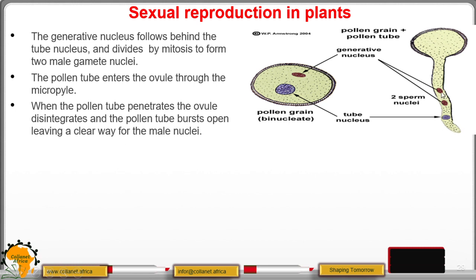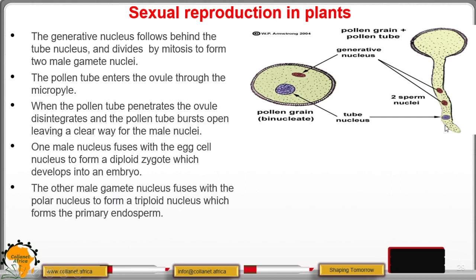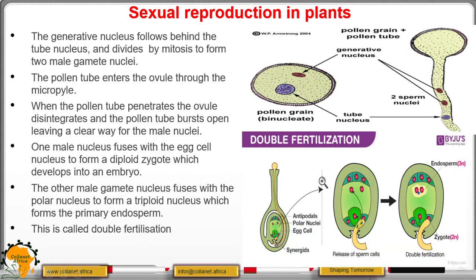One male nucleus fuses with the egg cell to form a diploid zygote, which later develops into an embryo. The remaining male nucleus fuses with the polar nuclei to form a triploid nucleus, which forms the primary endosperm. That is the basis of double fertilization in flowering plants.